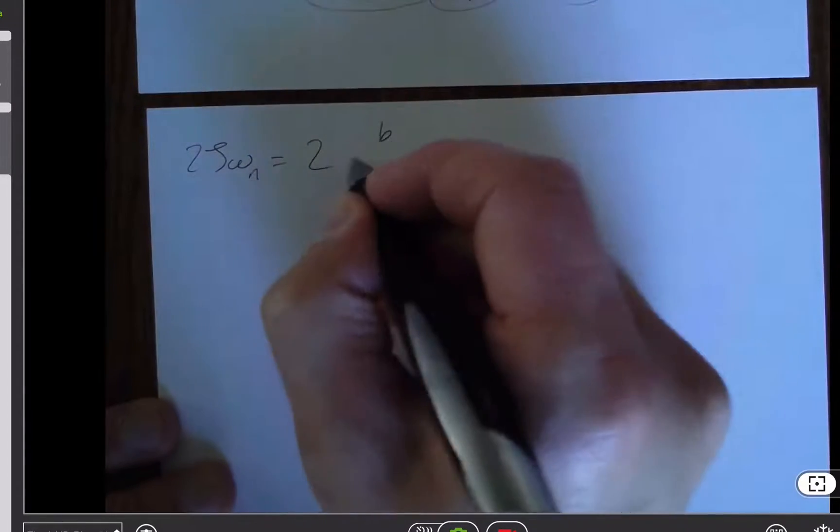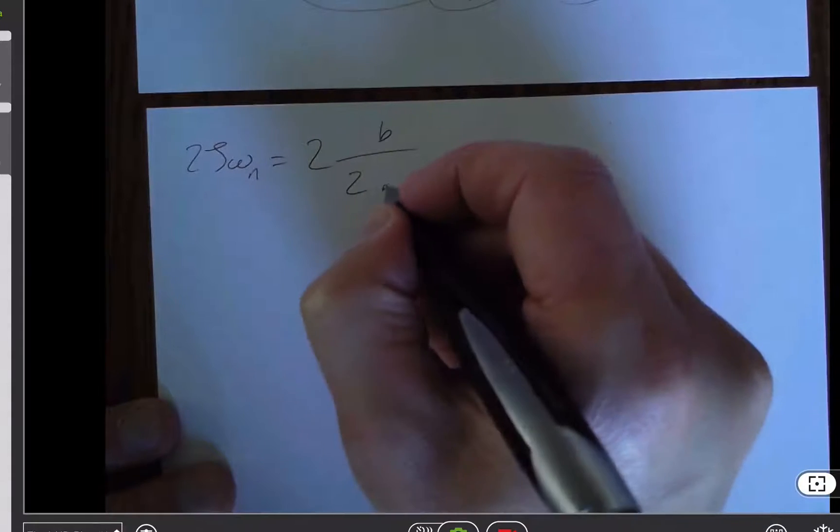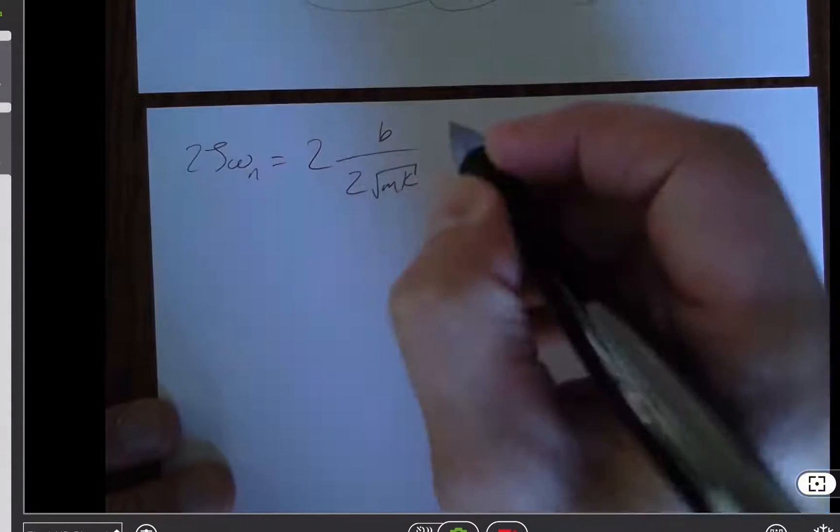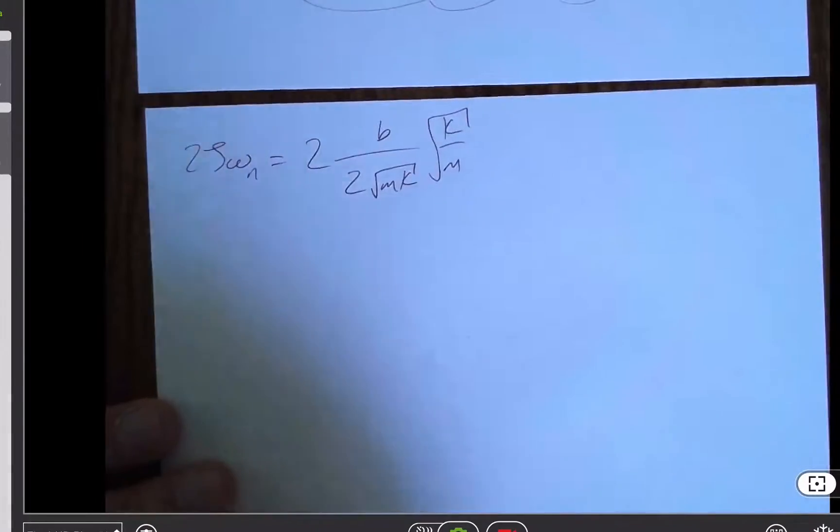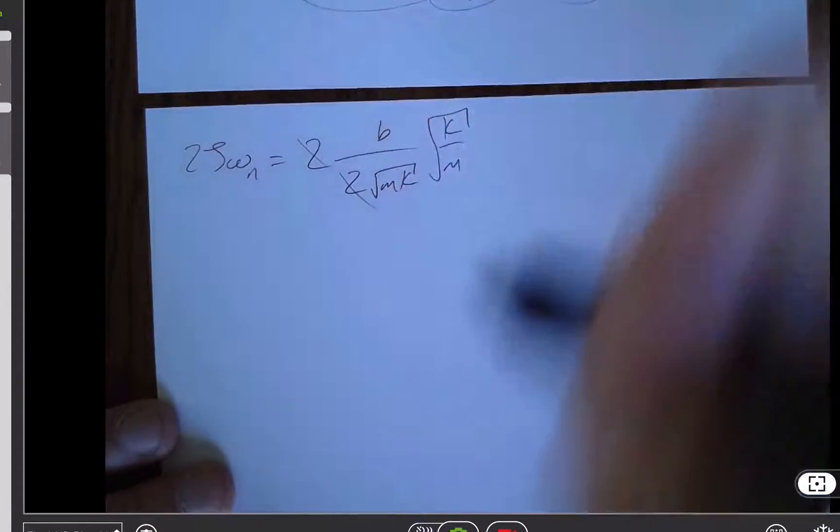So we still kind of haven't proven this. And so 2 zeta omega n is equal to 2b divided by 2 m k square root times k over m square root. Well, the 2s pretty immediately, obviously cancel.